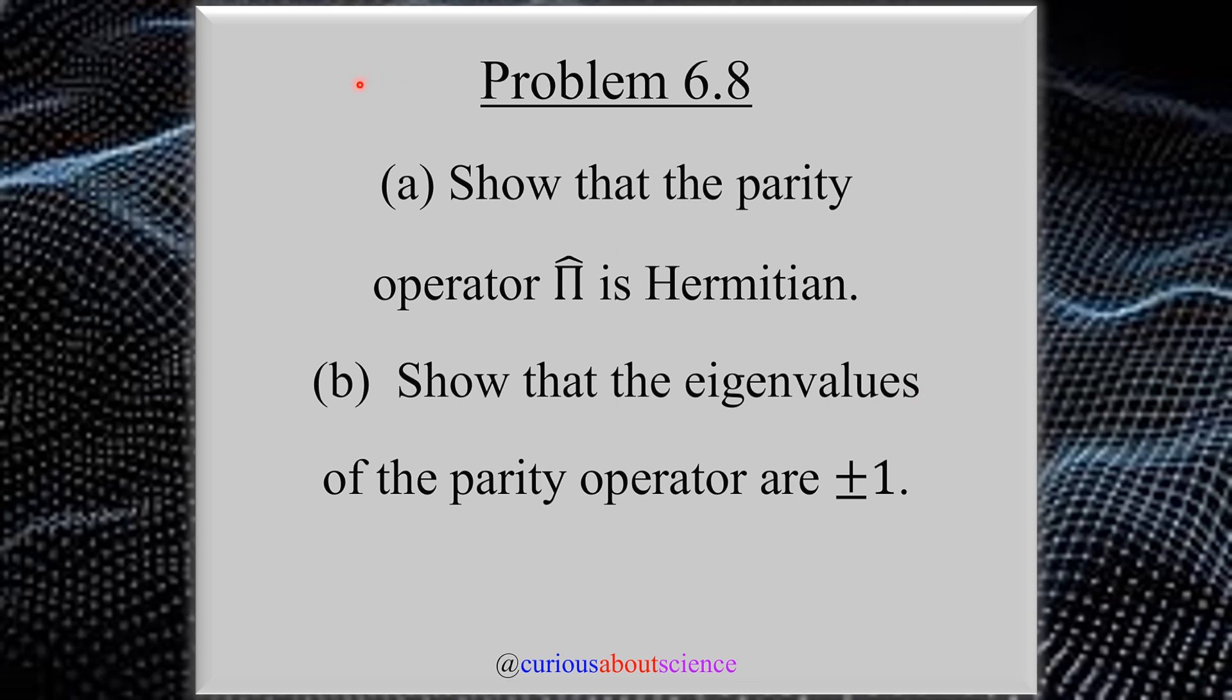The problem statement for today is pretty short and simple. We want to show that the parity operator in one dimension, which can be extended to three, is Hermitian. Recalling that Hermitian means the operator is equal to its adjoint or the complex conjugate transpose. Part B, we want to show that the eigenvalues of the parity operator are plus and minus one.